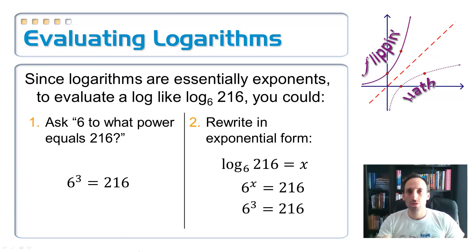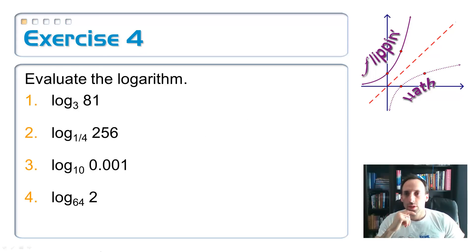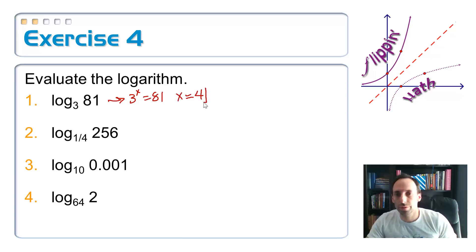So let's try a couple of these. No calculator, and yes, of course, on your quiz, you're going to have a couple of these, no calculator, trying to evaluate these logarithms. So the first one, I'm asking myself, log base 3 of 81. 3 to what power is equal to 81? 3 to the third is 27, so this is 3 to the fourth, so x is equal to 4.